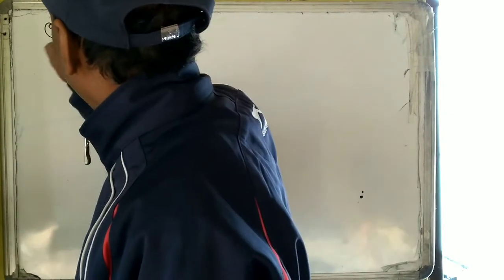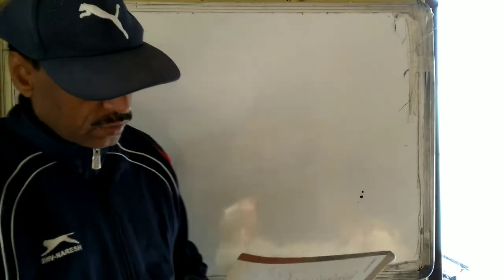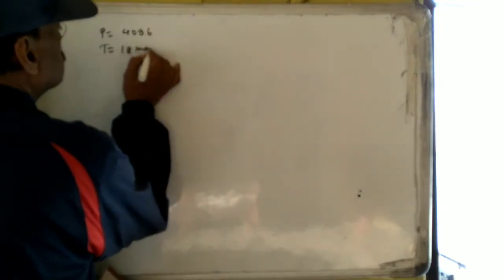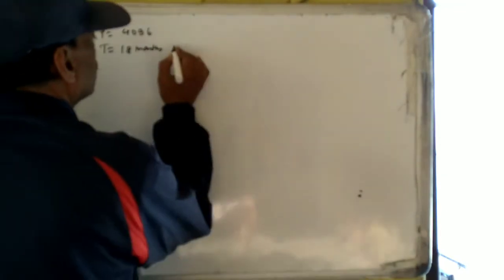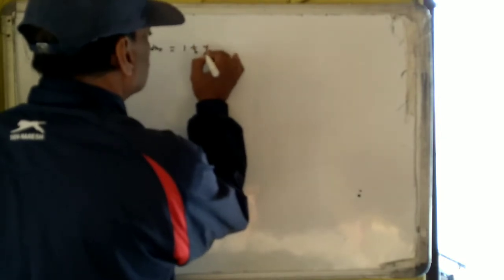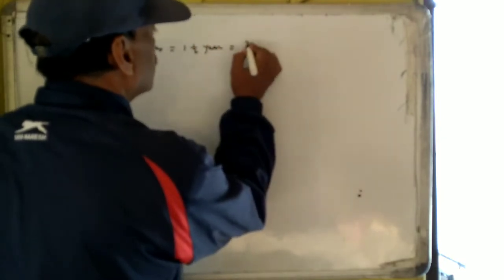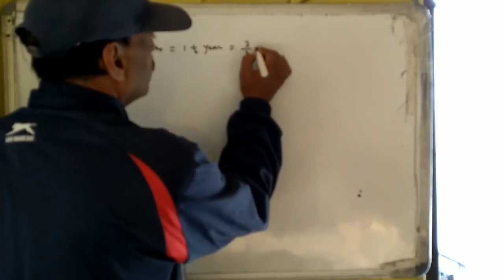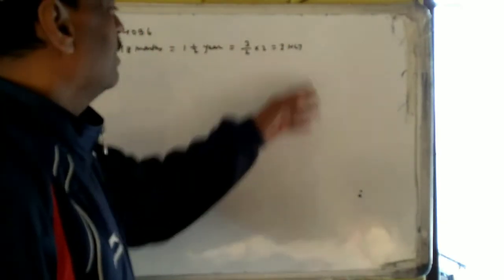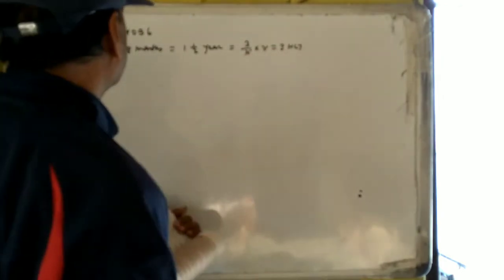In question number 9, the principal is 4096. Time is 18 months — we convert 18 months to years: it becomes one and a half years, which is 3 by 2. Since it is compounded half-yearly, the number of conversion periods is 3. The rate per annum needs to be converted accordingly.